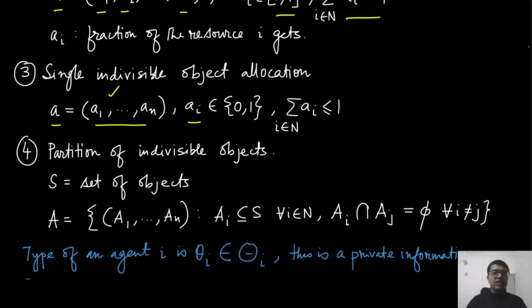The fourth and last example I will give is about partition of indivisible objects. Suppose there is a set of objects, some inheritance of a property, and the set of allocations in that case will be a partition of all those objects such that these a_i, individual a_i are subsets of S and each of this a_i and a_j are disjoint.